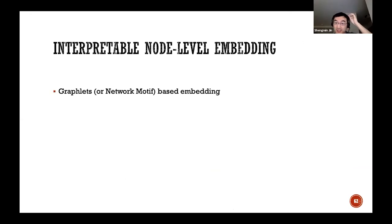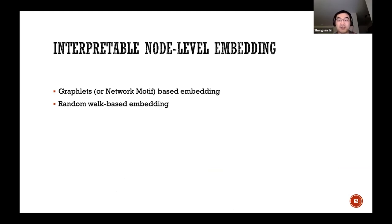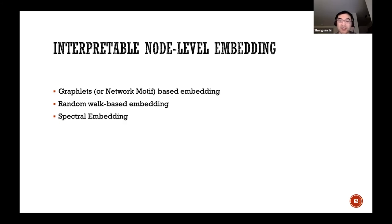For interpretable node-level embeddings, we conclude three types. First, graphlet or network motif-based embedding — graphlets or network motifs are small subgraphs that repeat frequently, like triangles, squares, or lines, and their information is used to represent a node. Second, random walk-based embedding, which embeds a node based on random walks starting from it. Third, spectral embedding, which uses the eigenvalues or eigenvectors of associated matrices.